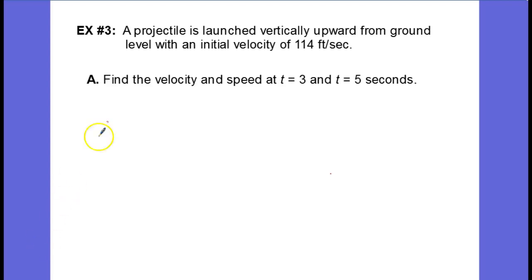In example 3, we have a projectile launched vertically upward from ground level with an initial velocity of 114 feet per second.